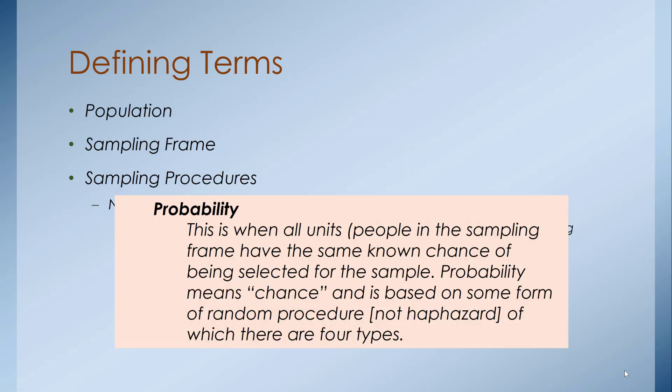There are two different paradigms for sampling procedures. The first is probability sampling, where all the units or people in that sampling frame have the same known chance of being selected. Probability means chance and is based on some form of random procedure. When we talk about random in research, we're not talking about a haphazard method — we're talking about a very systematic, planned way to randomly select individuals.